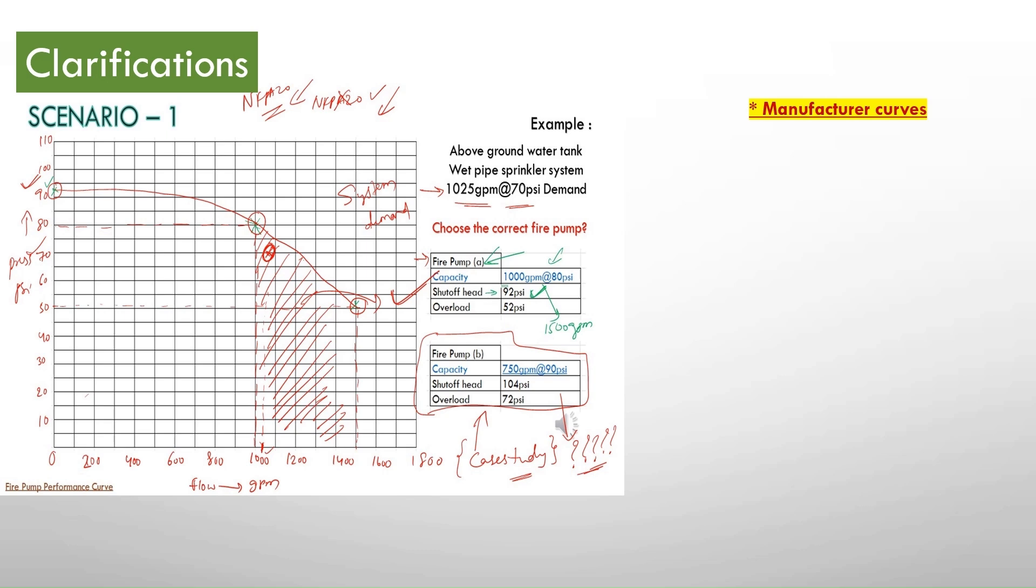There are 3 most important points that has to be discussed. Number 1, these curves are unique for each type of pump. And these are issued based on factory acceptance tests which is conducted in the factory by the manufacturers. And the third point is these curves are required during the field acceptance test or site acceptance test.